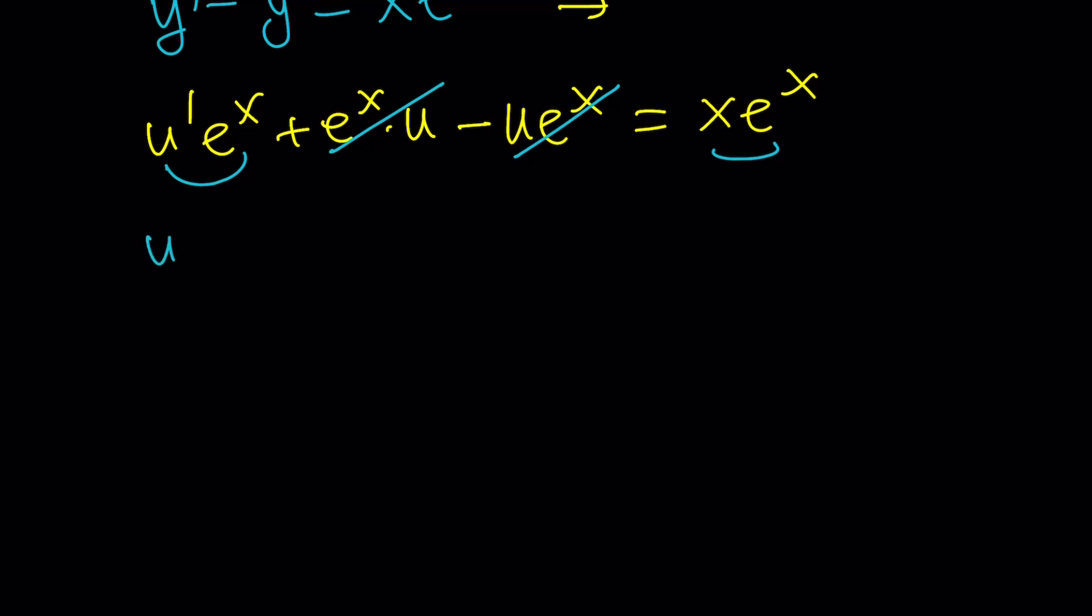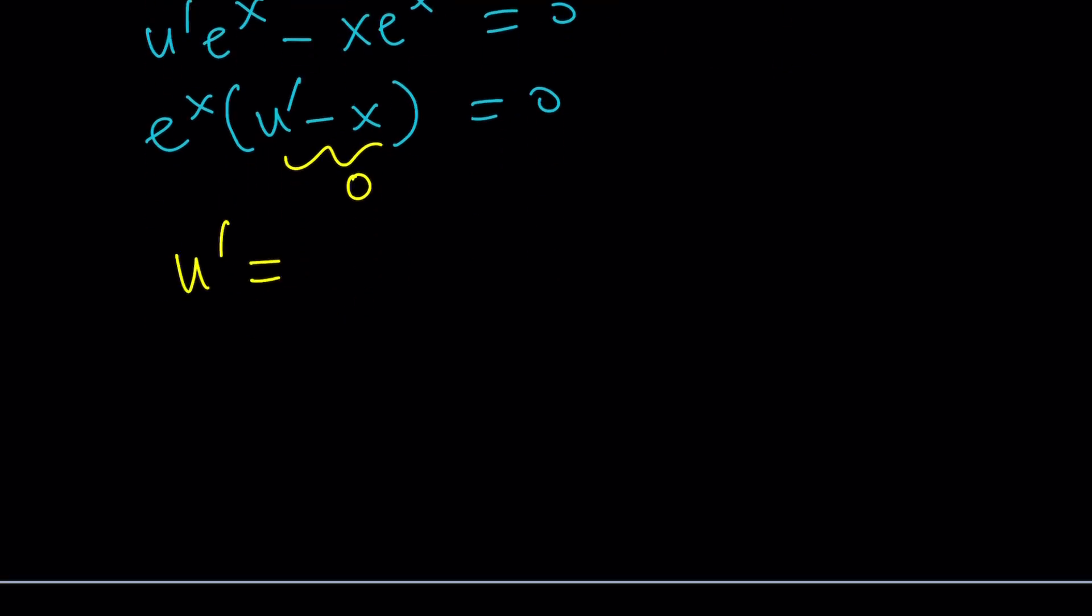This happens a lot with variation of parameters. We got this nice equation. e to the x is not zero. Let's put everything on the same side. Factor out e to the x and you're going to get u prime from here. e to the x cannot be zero. So, u prime minus x must be zero, which means u prime is x. Which means, by way of integration, u equals x squared divided by two.